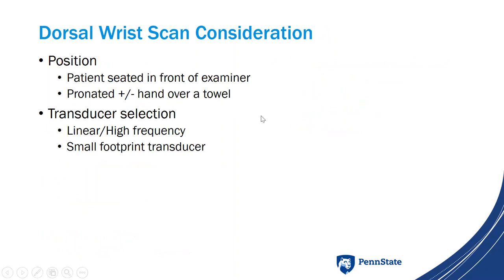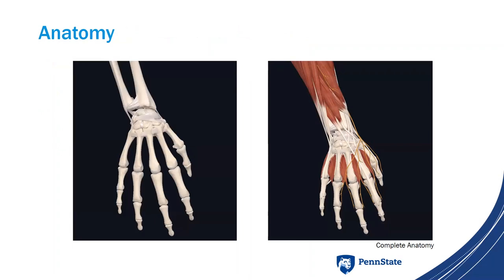For patient positioning, they're usually seated with their hand pronated on the exam table, with a towel for positioning if needed. For transducer selection, use a high-frequency linear transducer. A small footprint transducer is helpful, especially if you're planning a procedure.